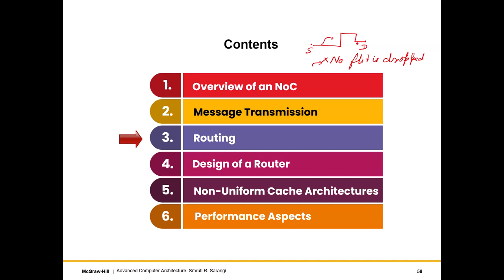Note that all the flits of a packet follow the same route, but all the packets of a message need not follow the same route. In an NOC we typically have packets only, but sometimes we have large multi-packet message transfers as well. Every packet has a head flit, so the routing is basically done for the head flit. The rest of the body flits just follow the head flit, and the tail flit is the last flit in the packet.